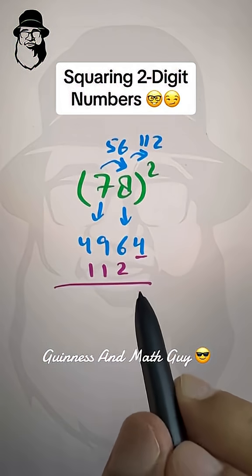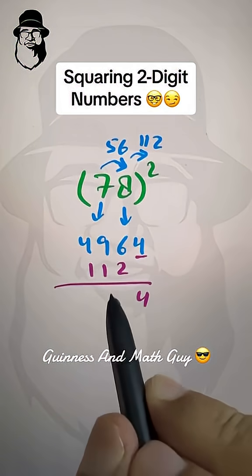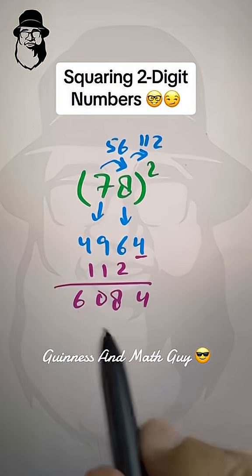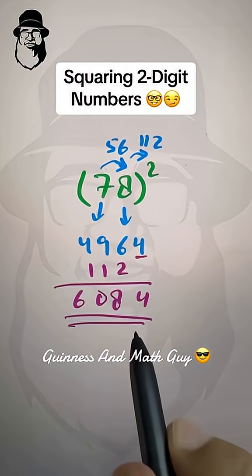Now we add them: this is 4, this is 8, this is 10, this is 6 — so 6084 is your answer.